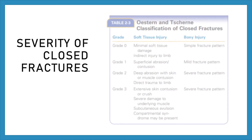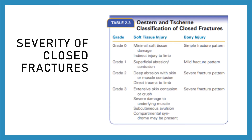Severity of closed fractures — Ostern and Scherner classification: Grade 0 — minimal soft tissue damage, direct injury to limb. Grade 1 — superficial abrasion or contusion. Grade 2 — deep abrasion with skin or muscle contusion, direct trauma to limb. Grade 3 — extensive skin contusion or crush, severe damage to underlying muscle, subcutaneous avulsion, and compartment syndrome may be present.